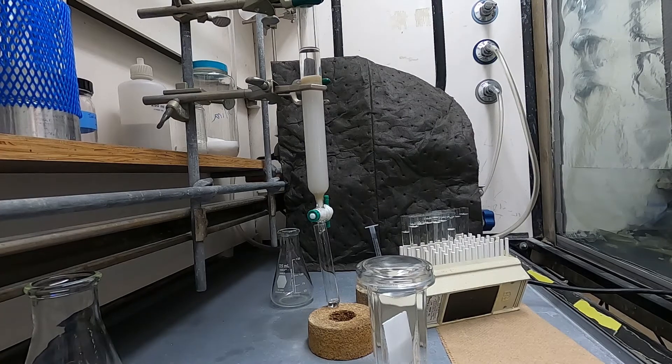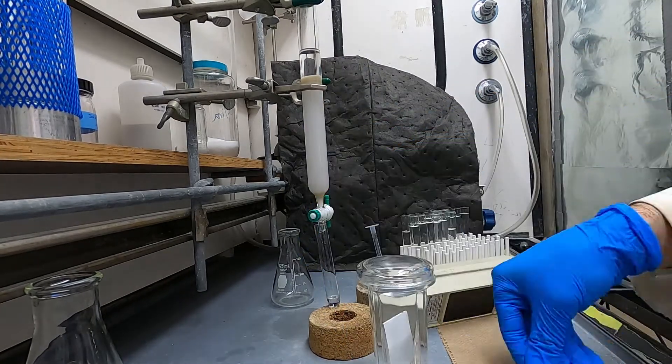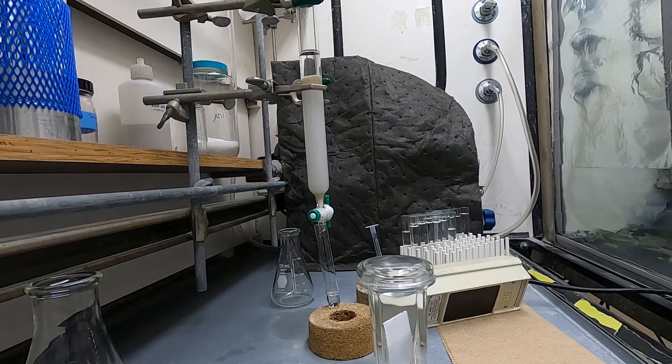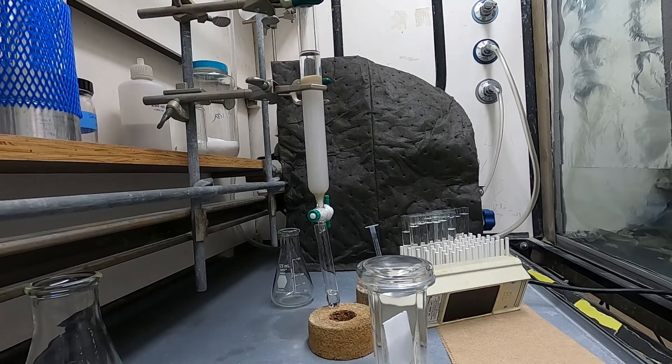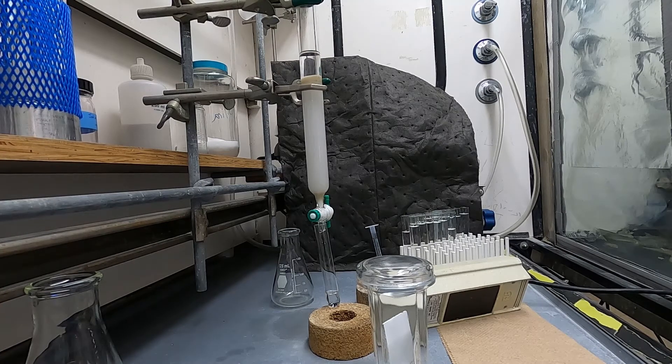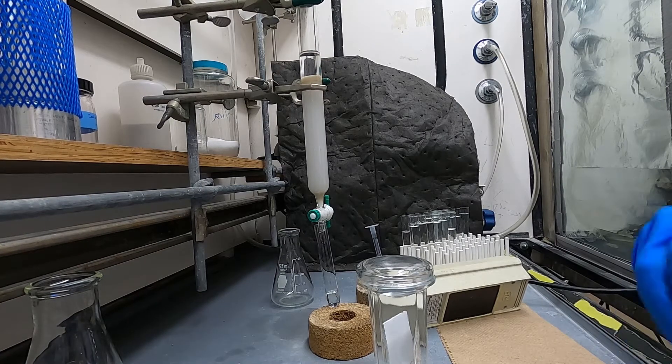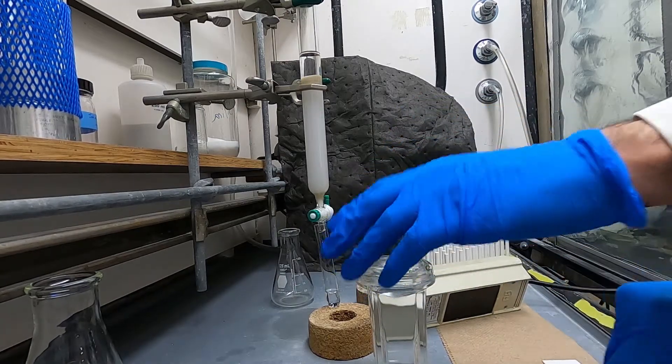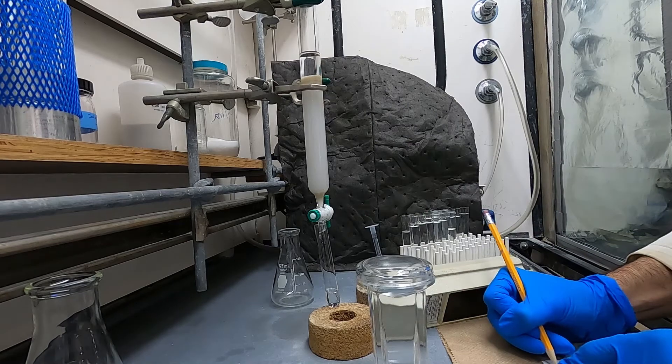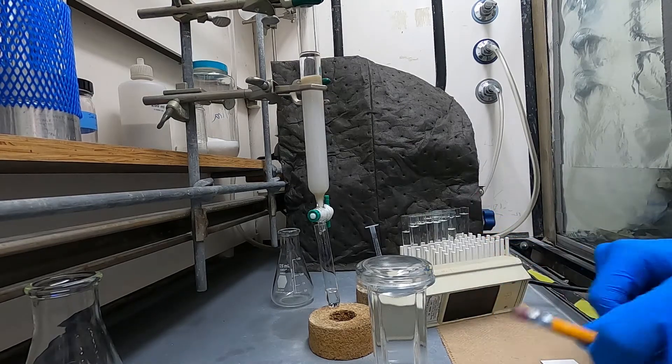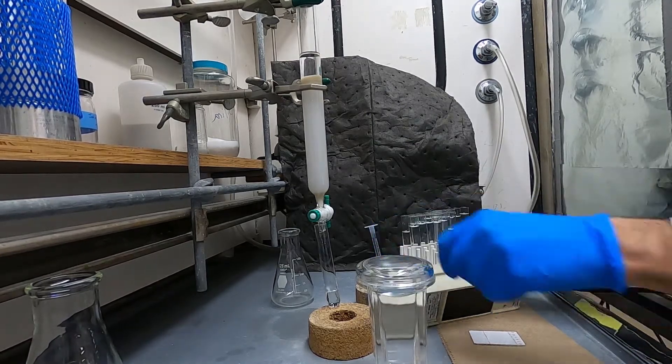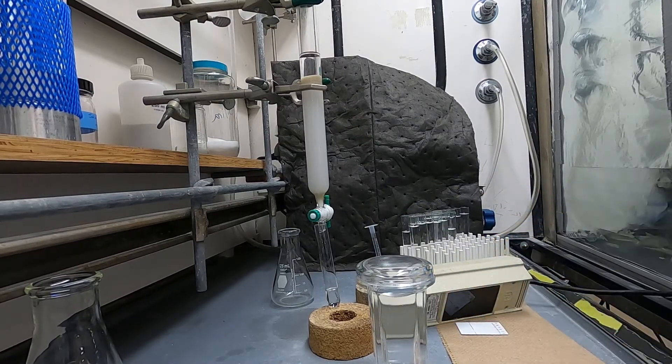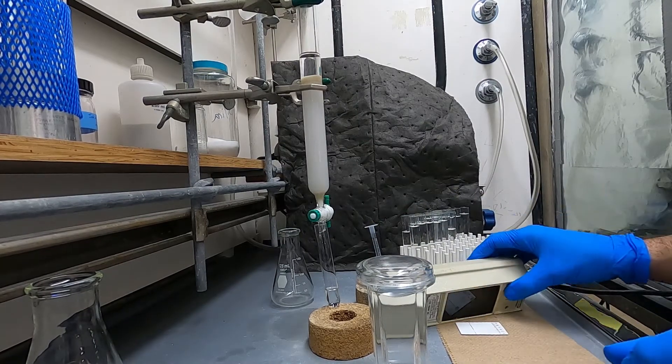And if that happens you'll oftentimes just have to run the column again so it is better to take things slowly and try to do it right the first time rather than having to run the column twice but sometimes it just happens that way. There was a brief flash of a probe TLC that I did and you could see that there were I think five or six spots and so I'm hoping that I at least get a good separation and get the major spot by itself.